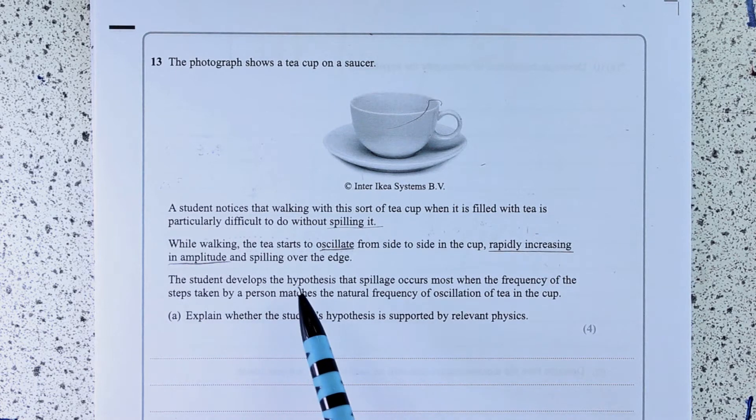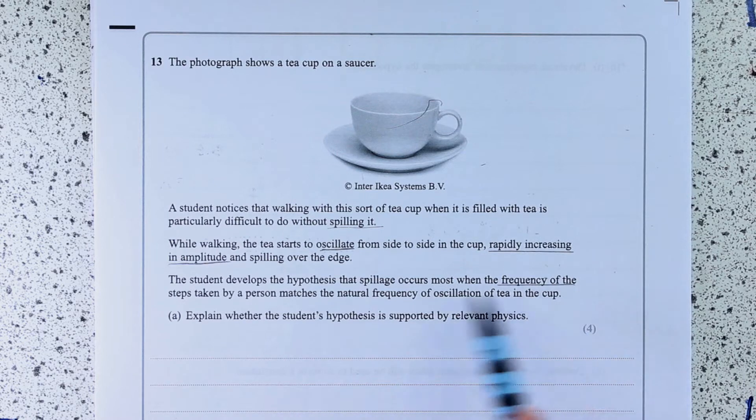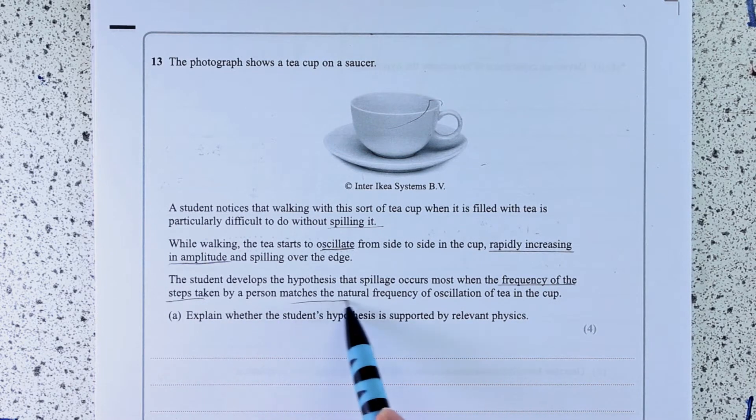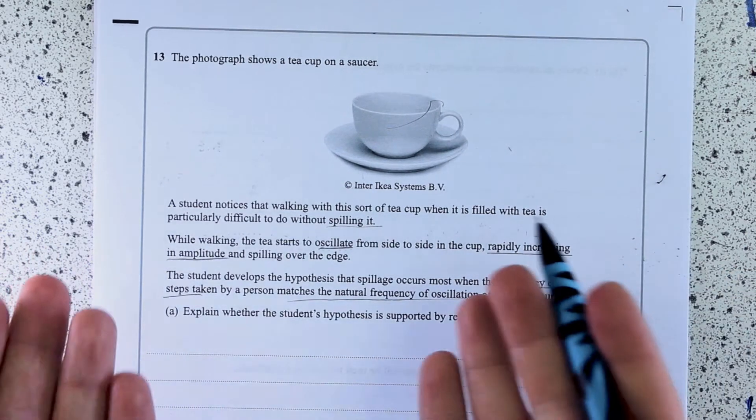Now, the student develops the hypothesis that the spillage occurs most when the frequency of the steps matches the natural frequency of oscillation of the tea in the cup. Now, what's this all about? Well, it's about resonance, isn't it?